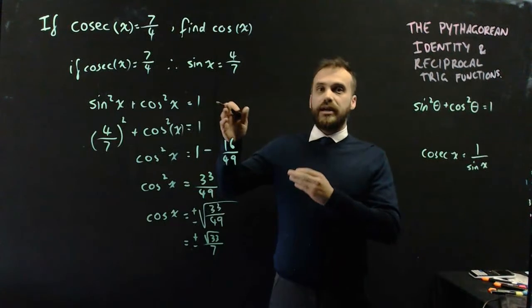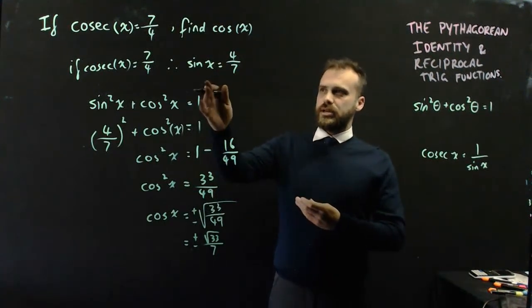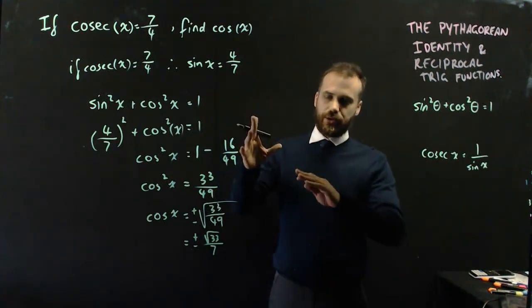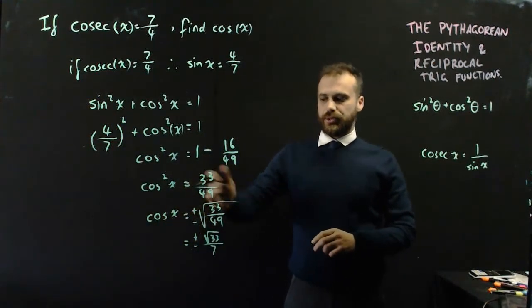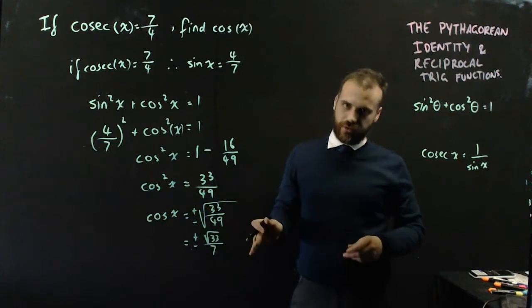So, if cosec x equals 7 on 4, sine x equals 4 on 7, which is the reciprocal, and then we can use Pythagoras' theorem to say that cos x is equal to plus or minus root 33 on 7.